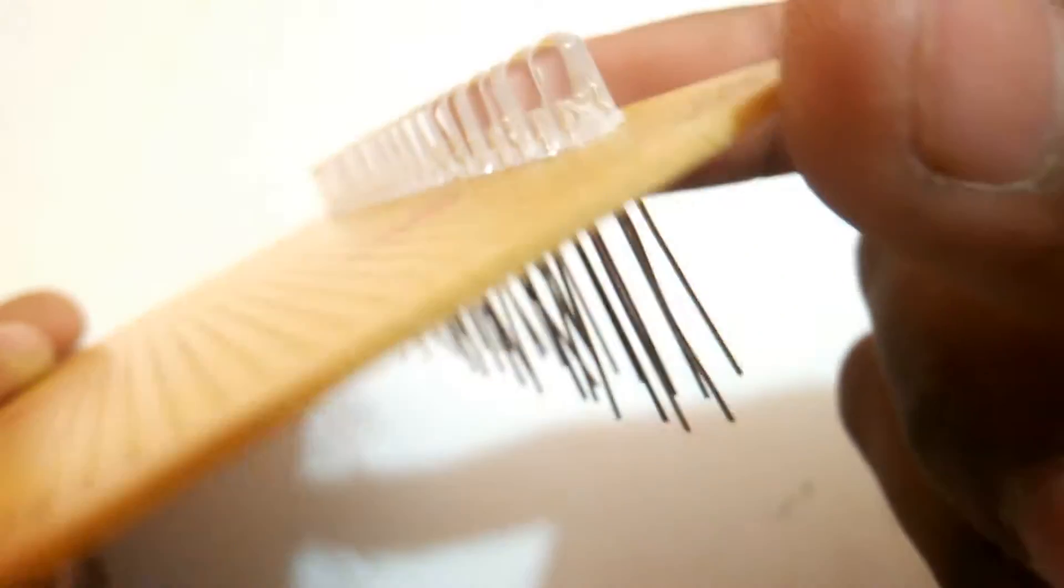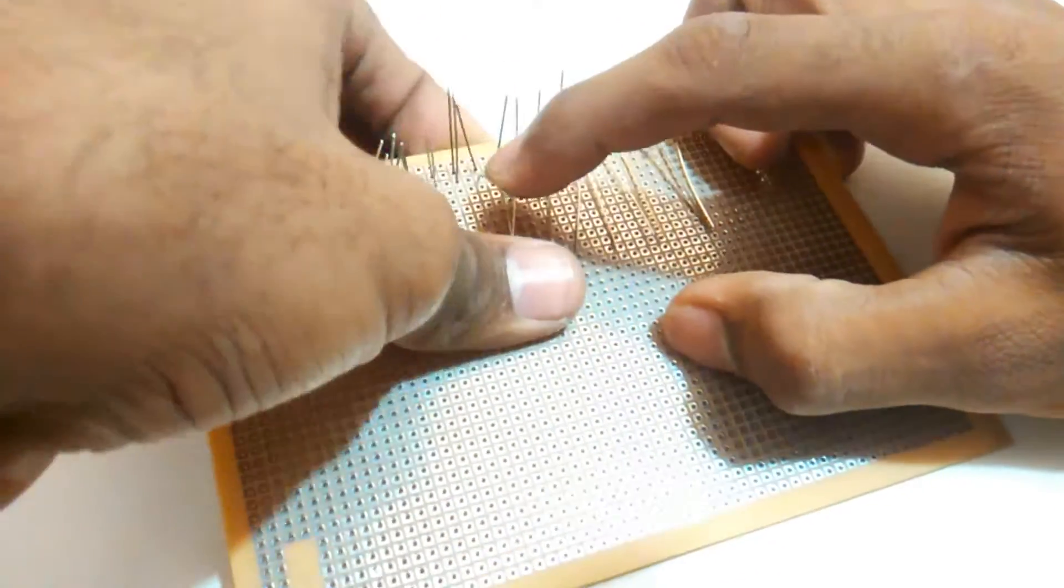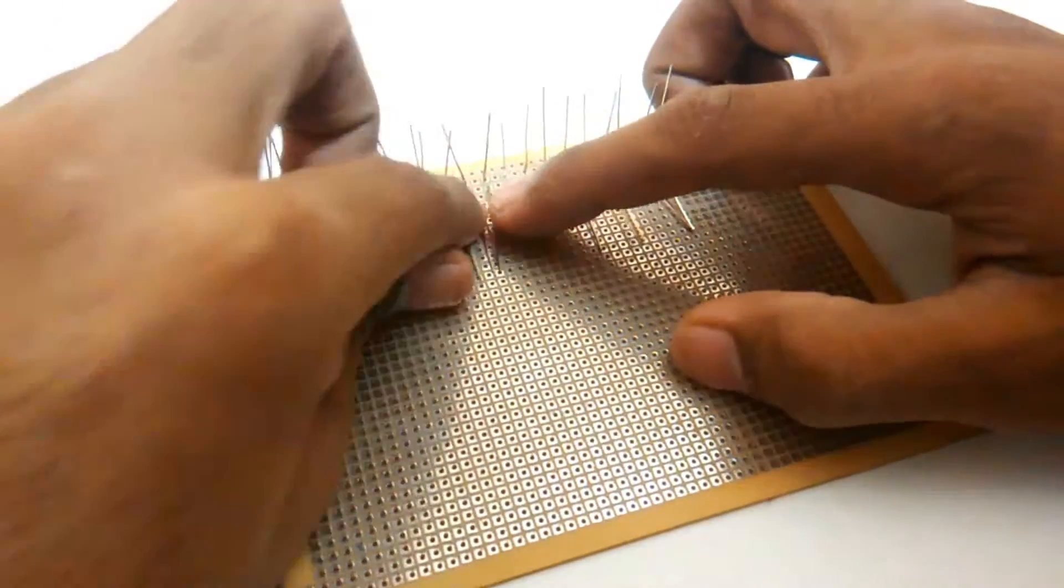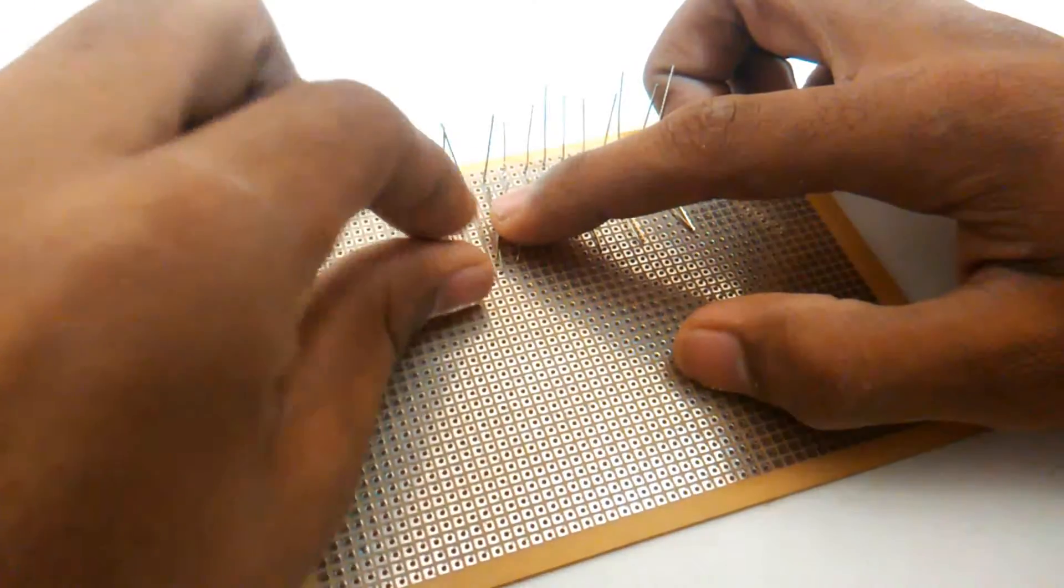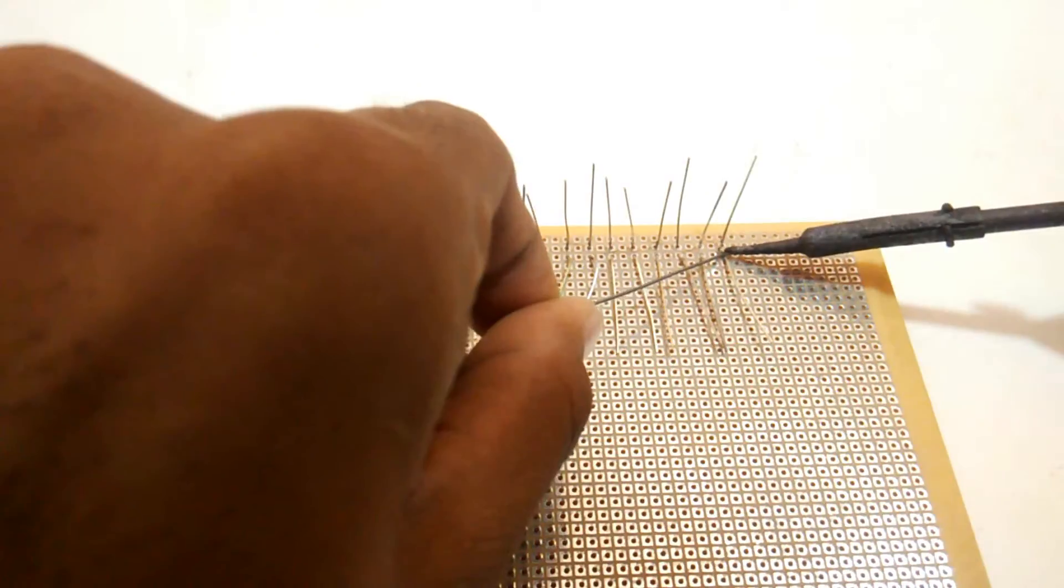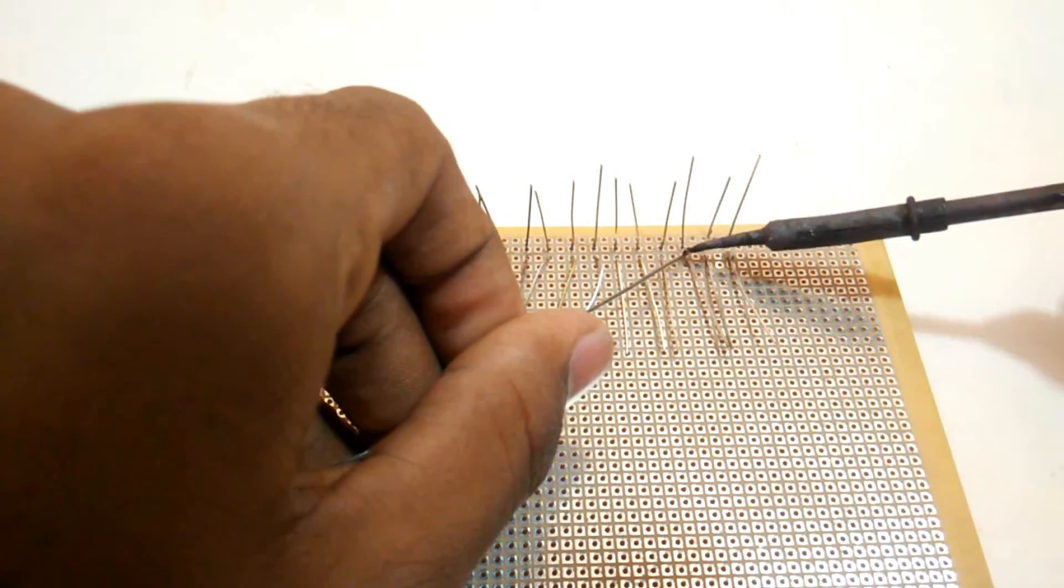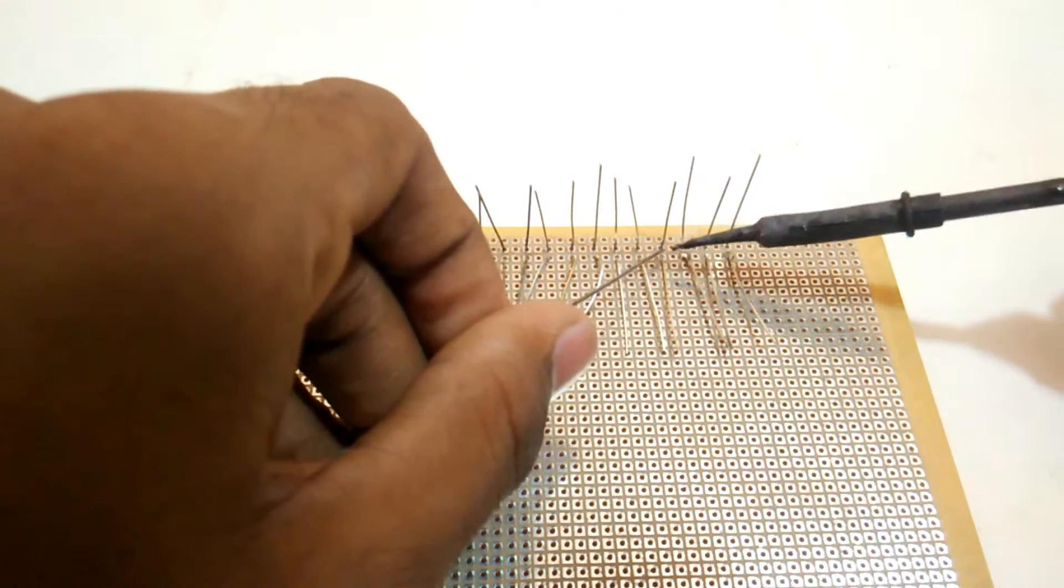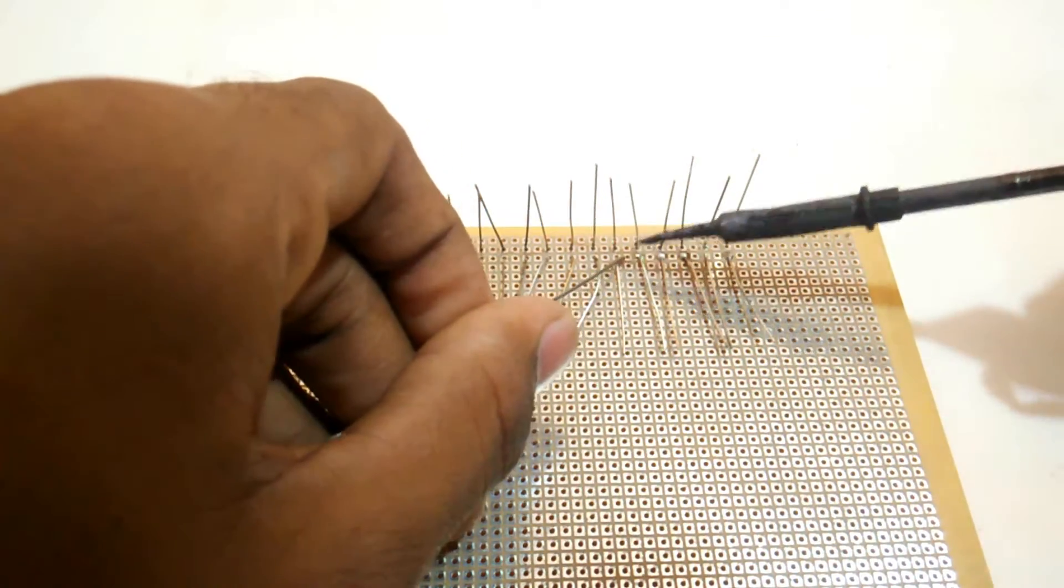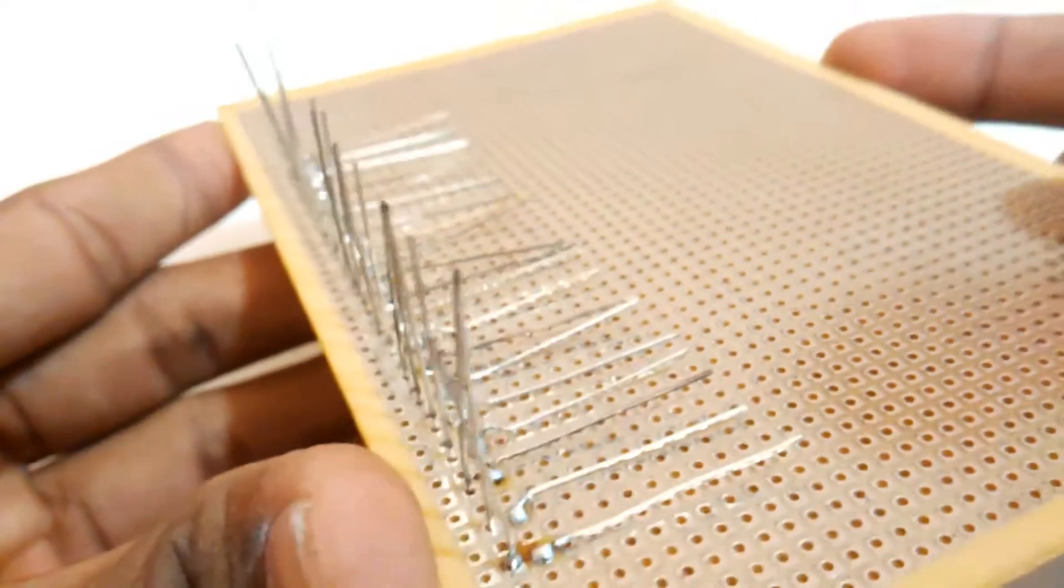After that is done, we can start bending the positive legs of the LEDs directly on the PCB. That will help later for the soldering purpose. Once all the legs of the LEDs are bent in the right manner, we can start the soldering process by using the soldering iron. All the positive legs of the LEDs are going to be left open because they are going to be connected with the digital input-output pins of the Arduino microcontroller. The positive legs on my PCB look like this.